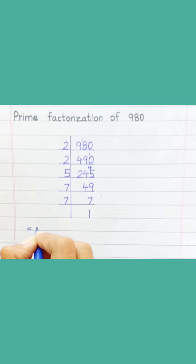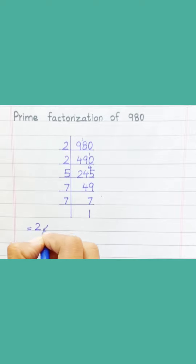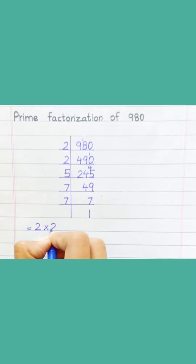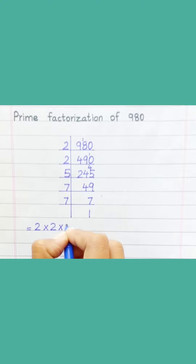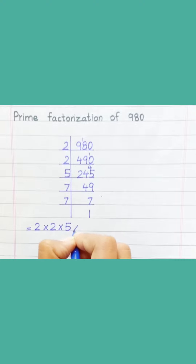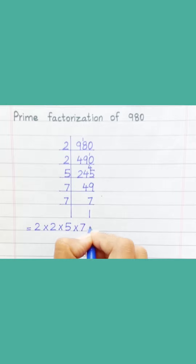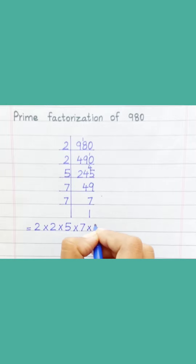Equal. Two multiply two, multiply five, multiply seven, multiply seven.